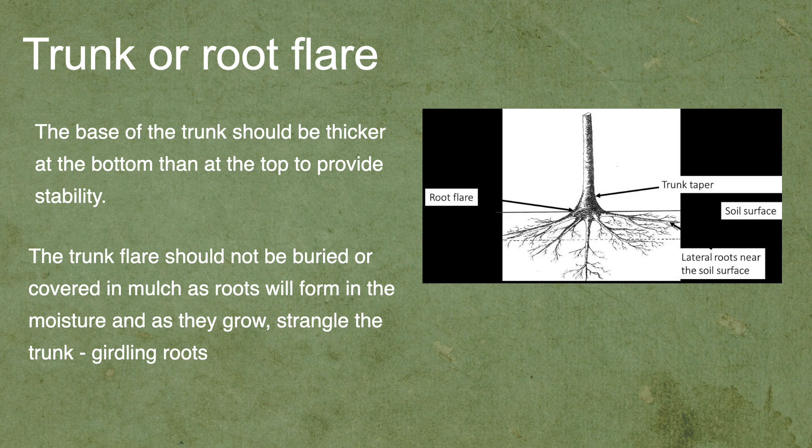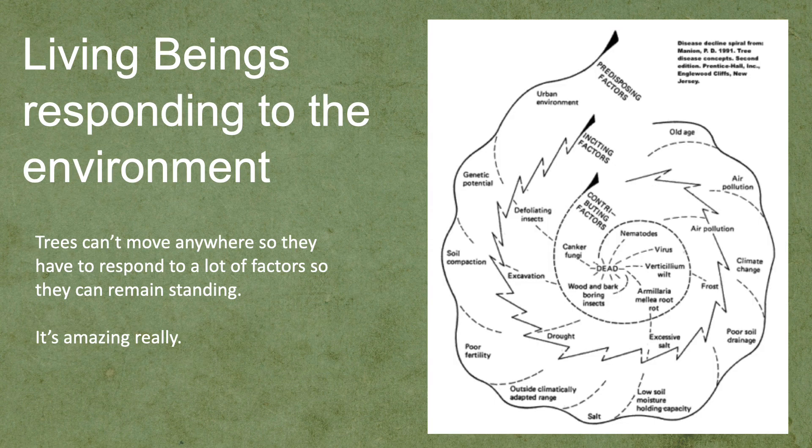Let's go back to trunk or root flare. It's really important that the base of the trunk is thicker and that we've got that lovely root taper. We need to remove stakes from trees, but we also need to make sure we're not burying the bottom of the tree in mulch, or roots will start to grow from too high on the trunk. These can form girdling roots, which effectively strangle the trunk and would cause the tree to fall over, because nutrients and water wouldn't be able to travel up and down the tree as it got older.